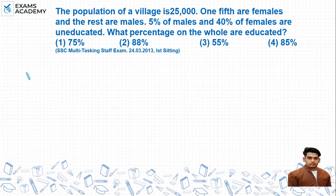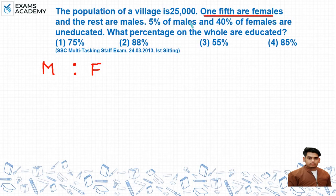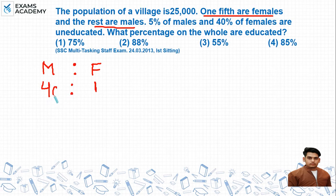इस question को हम ratio method से करेंगे। सबसे पहले male और female की ratio देखते हैं। Question में given है कि one-fifth females हैं, बाकी males हैं। तो अगर female 1 out of 5 है, तो male बचे 4। इसको simplify करने के लिए दोनों ratio को 100 से multiply करेंगे — male आएंगे 400 और female आएंगे 100।